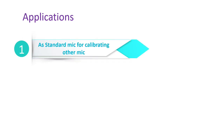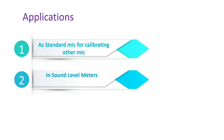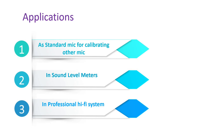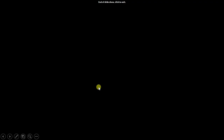Now let us see the applications of the capacitor or condenser microphone. First, it is used as a standard microphone for calibrating other microphones. Second, it is used in sound level meters. Third, it is used in professional hi-fi systems, given its frequency response from 40 Hz to 15 kHz and distortion less than 1%.